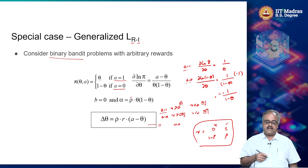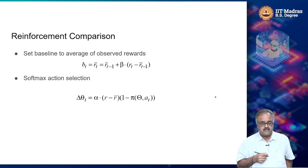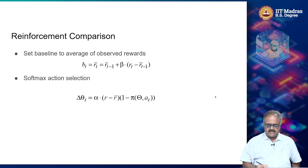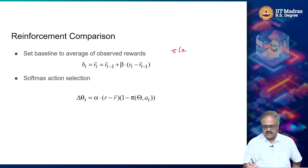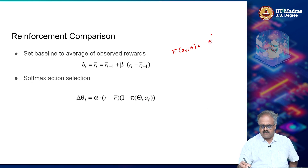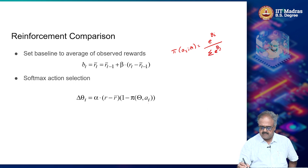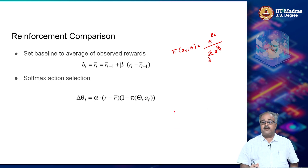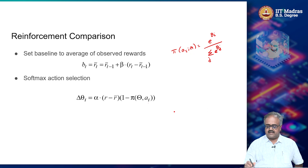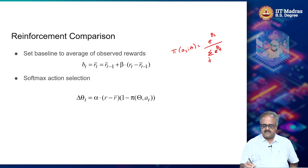Now for the softmax case: I assume that for every action a_i there is a parameter θ_i. The policy is π(a_i | θ) = e^{θ_i} / Σ_j e^{θ_j}. That is the softmax expression, and for every action a_i there is a corresponding θ_i, making θ a vector θ_1 through θ_m.